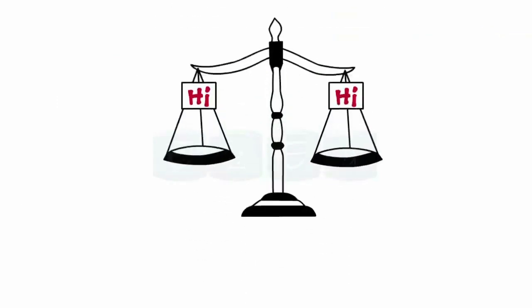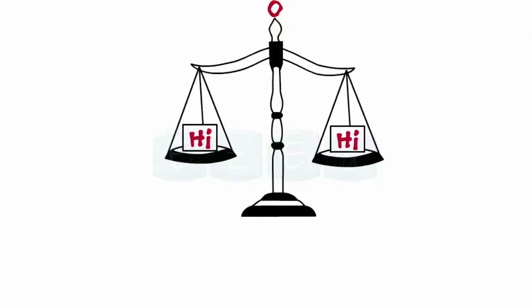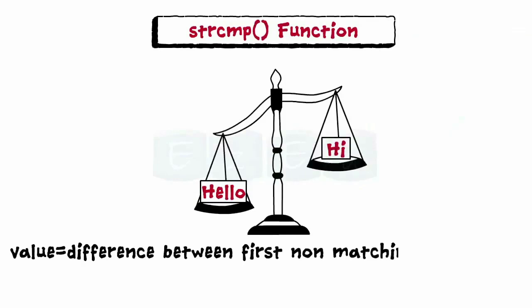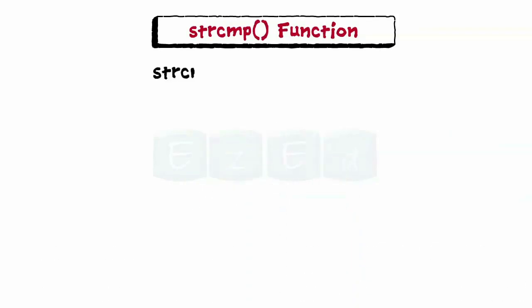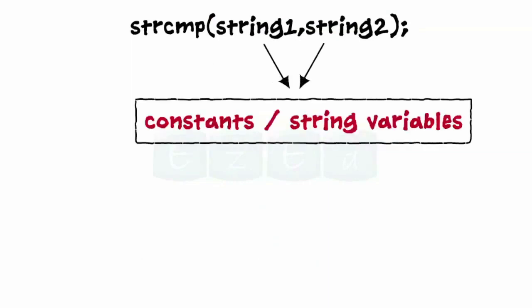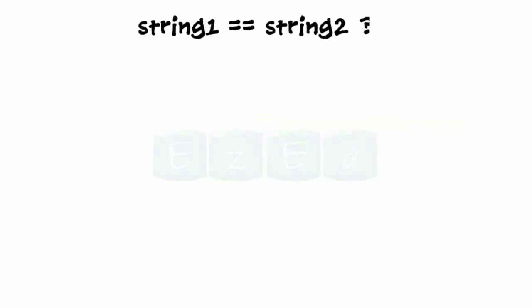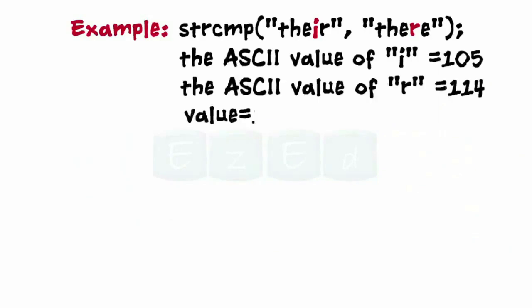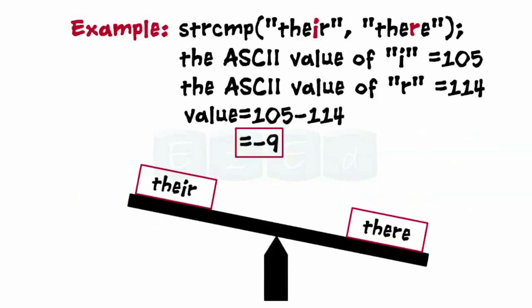The next built-in function is strcmp. It compares two strings and has a value of 0 if they are equal. If they are not equal, the function returns the difference between the first non-matching characters. String1 and string2 can be constants or string variables. This function helps determine whether the strings are equal — if not, it determines which one is alphabetically above. For example, this function returns -9, which is the difference between the ASCII values of 'i' and 'r'. As the result is negative, string1 is alphabetically above string2.